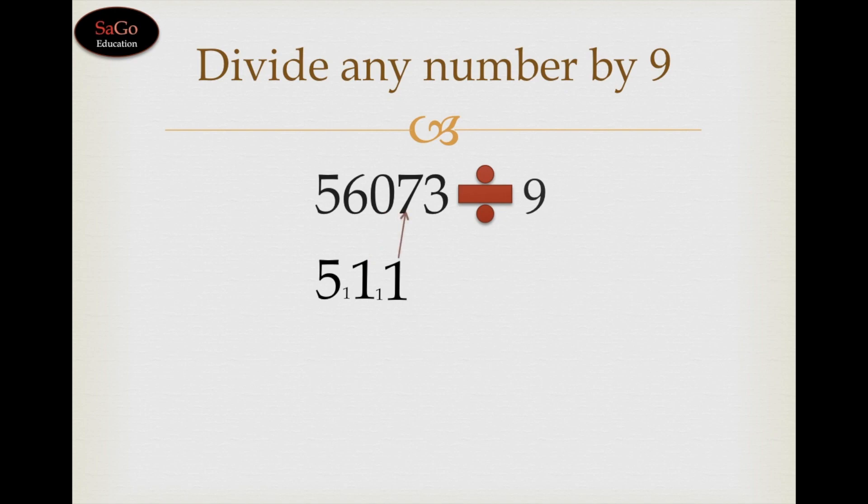This 11 would be added to the next digit which is 7. 11 plus 7 is 18, write 18, 1 in the field of it. 18 plus 3 is 21, write 21.